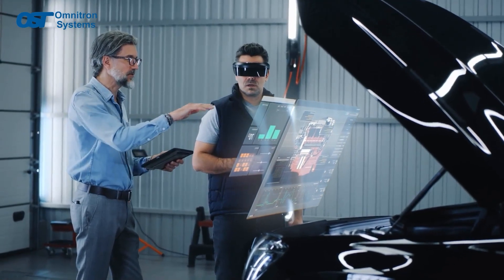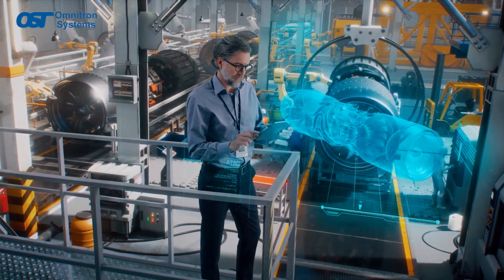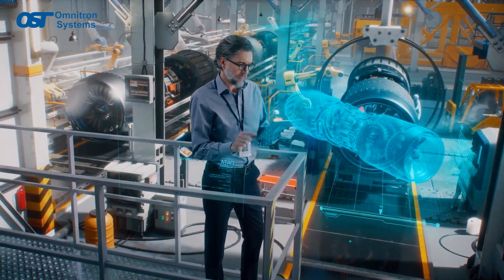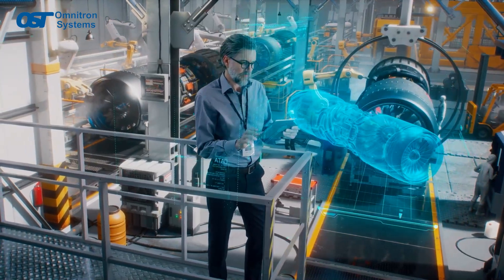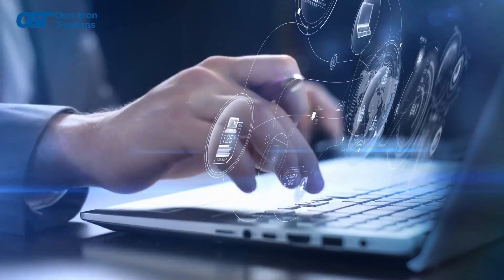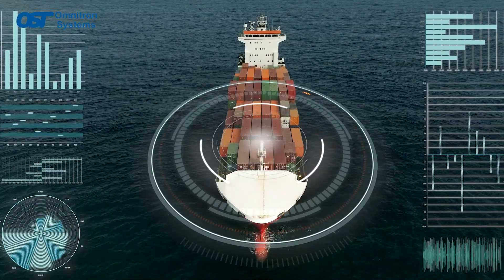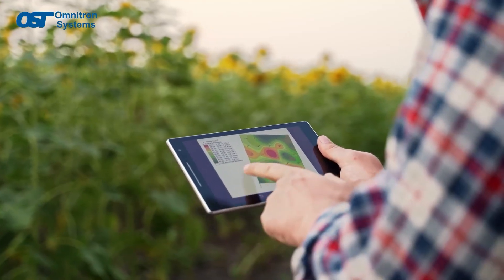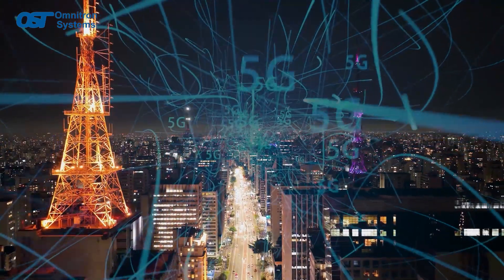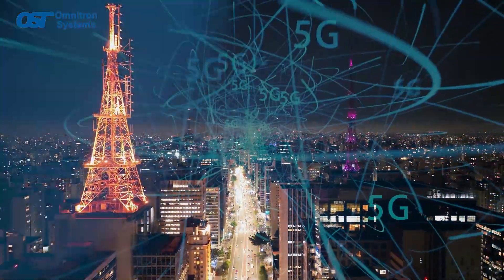IoT is being adopted in almost all industries and domains. Here are some examples. IoT is helping enterprises streamline their business operations and supply chain management. IoT helps the agriculture industry with smart irrigation, livestock tracking, and even soil chemistry.